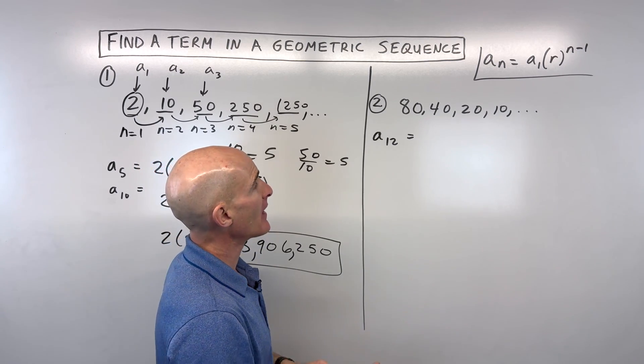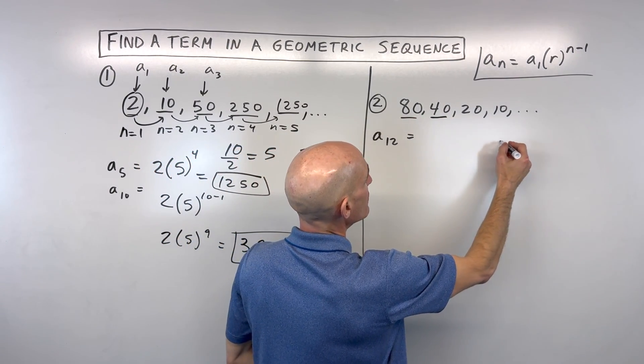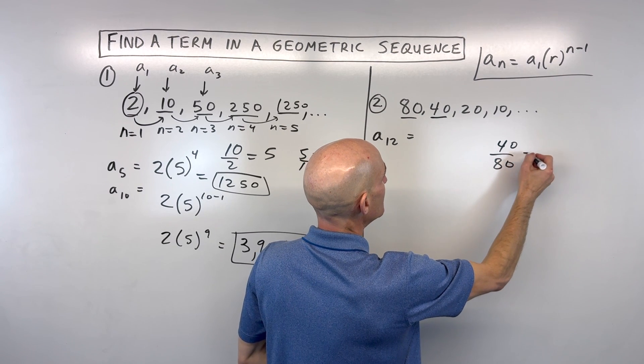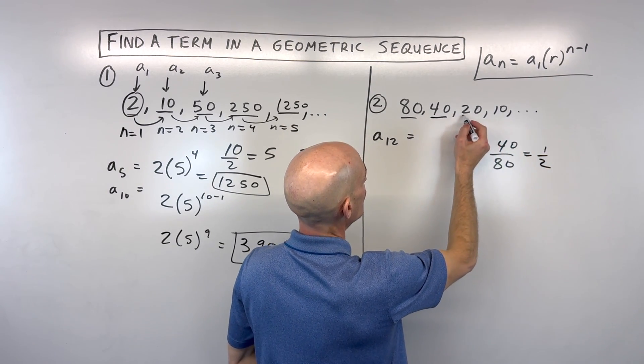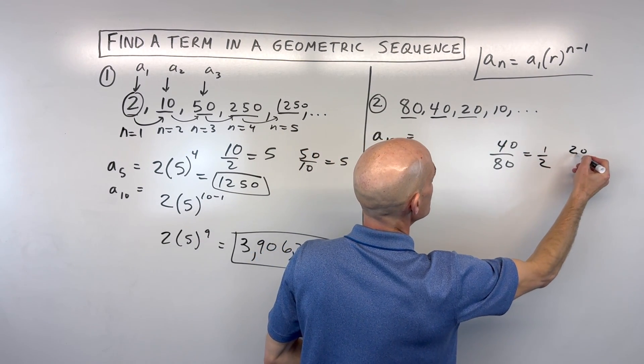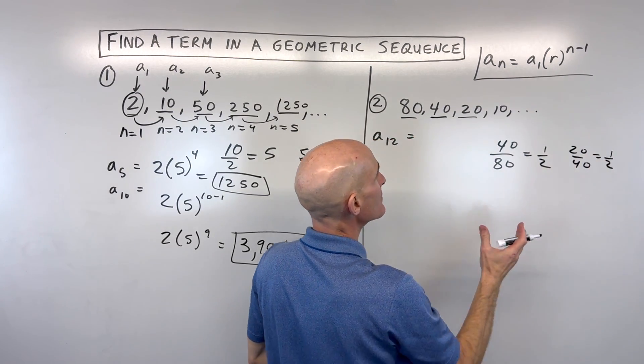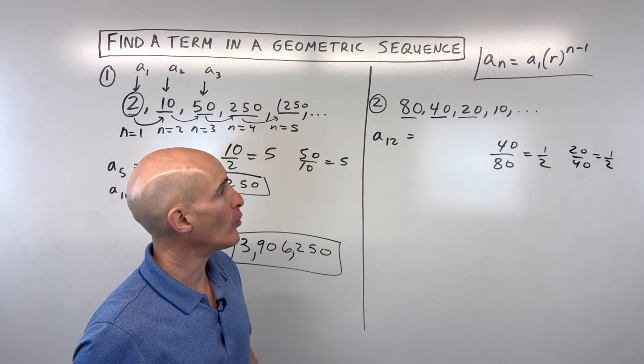So here you can see we're actually multiplying by 1 half. And if you want to verify that, or just make sure, take the term divided by the one before it. So 40 divided by 80, that reduces to 1 half. Or 20 divided by 40, that reduces to 1 half. And you can see you keep getting that same common ratio of 1 half.